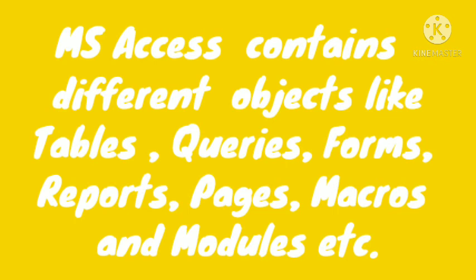We set a report with information for students and get report cards for each and every student by creating a single page. If there is any extra information to type, it can be added on additional pages. MS Access also includes macros, which are instructions that tell how to handle the database or manipulate data in the tables. Modules are used to access that data in software like Visual Basic.